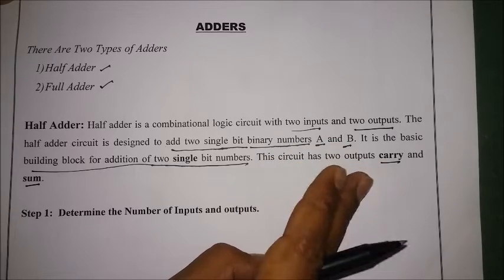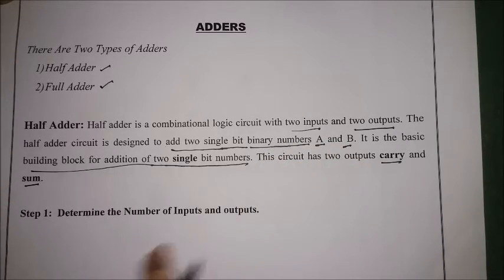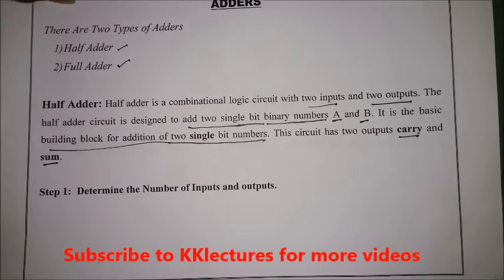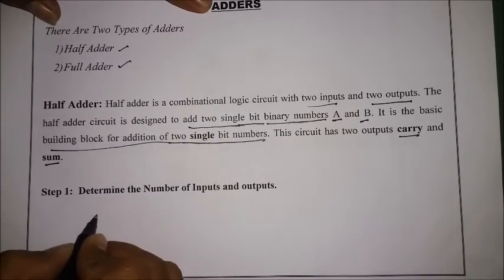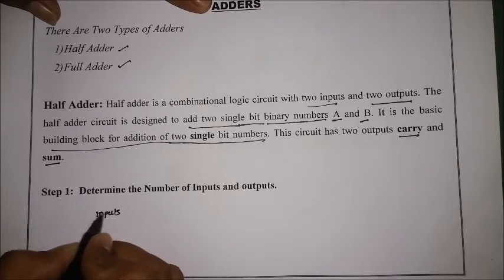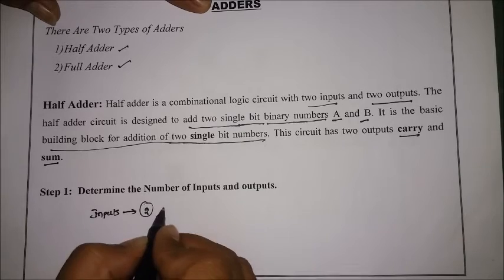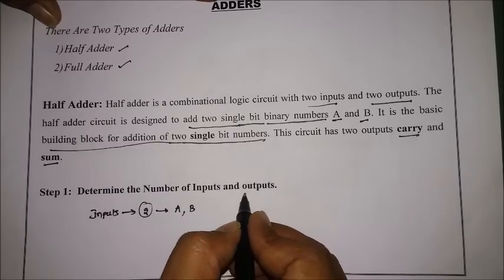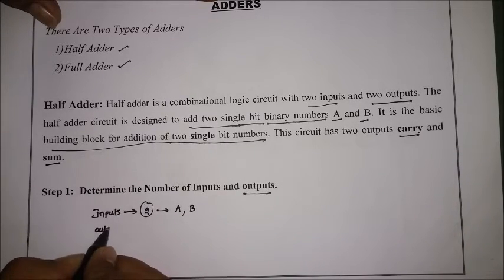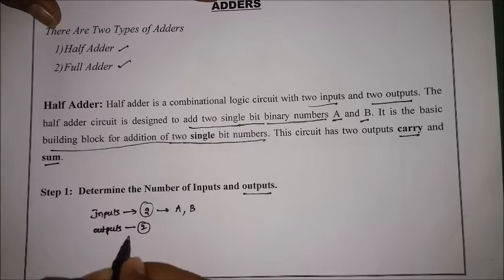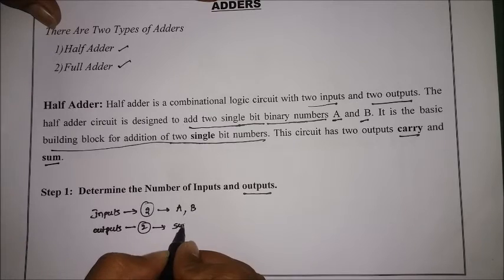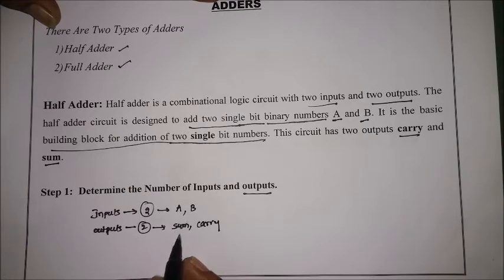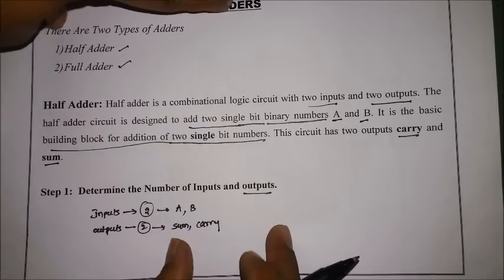Now determining the first step according to the designing procedure: identify the number of inputs and outputs. Here the inputs are two — I am taking them as A and B. Now the number of outputs: I need to identify those as well. The outputs are also two — one is sum and the other is carry. So we have two inputs A and B, and two outputs sum and carry.